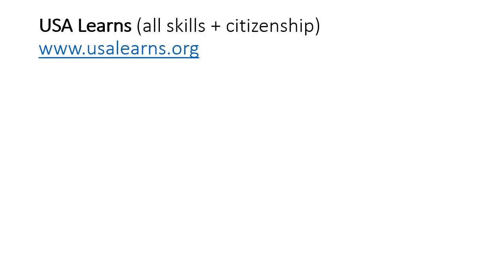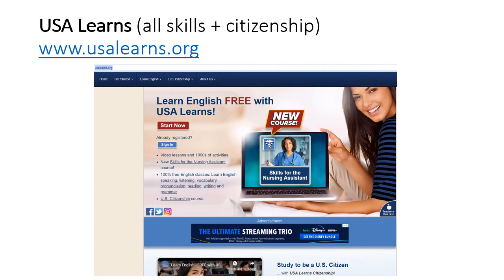Here's the last website. It's called USA Learns, and it has lessons for all English skills: listening, speaking, reading, writing, grammar, vocabulary, and pronunciation. It also has lessons for people who want to study about U.S. citizenship. The address is www.usalearns.org. You must click Start Now and create an account with a username and password. Then you can click Sign In and go to the different lessons. This website also has ads, so be careful not to click on them.